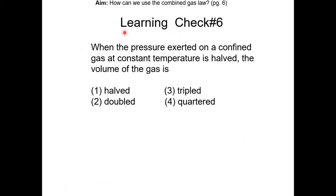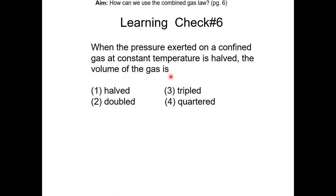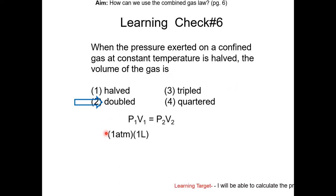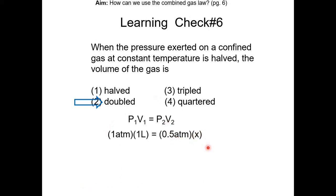Learning check: when the pressure on a confined gas at constant temperature is halved, the volume does what? Using the dummy number method, set initial pressure and volume to 1. New pressure is 0.5 atmosphere. Solving for x — the volume — gives 2 liters, which is double the original 1 liter. So the answer is choice 2: the volume doubled.